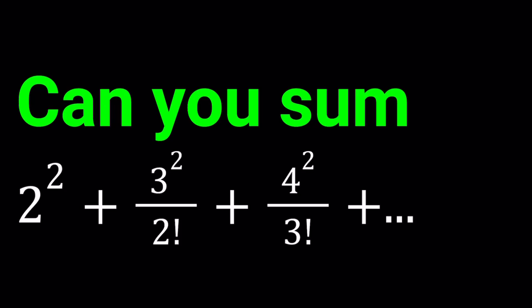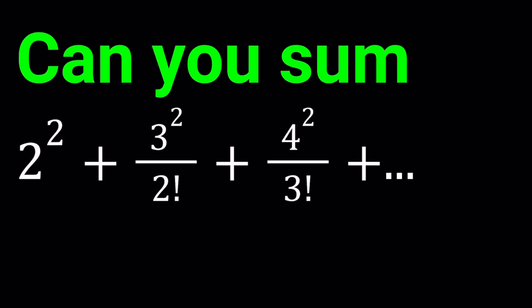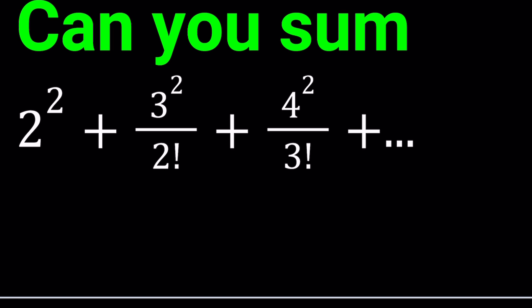Hello everyone. In this video we're going to be evaluating an interesting infinite sum. We have 2 squared plus 3 squared divided by 2 factorial plus 4 squared divided by 3 factorial, and so on. The general idea is you take (n+1) squared and divide by n factorial — the numerator always has a base one larger than the denominator's factorial argument. There's going to be a lot of disassembly and assembly, so bear with me and try to keep track.